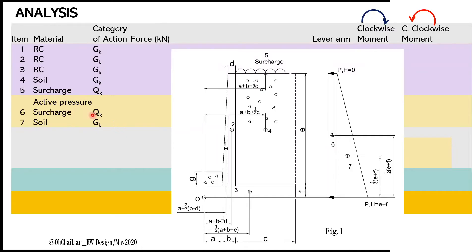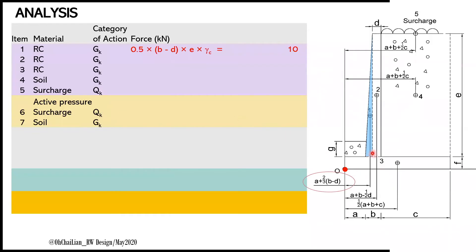The forces in kN can be determined based on the highlighted area of each item. Items 1 to 5 contribute to vertical forces, and items 6 and 7 contribute to horizontal forces. The level arm of vertical force is measured as a horizontal distance from the centroid of an item to point O, while horizontal force is measured as vertical distance from centroid to point O. For example, for item 1, the force can be calculated from the area of the shown triangle, and the level arm is calculated from the equation a plus two-thirds b minus d.